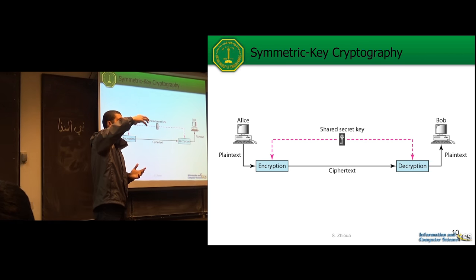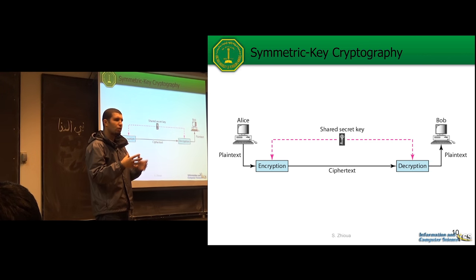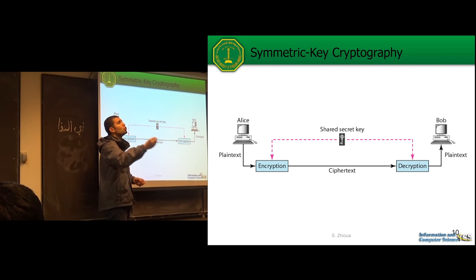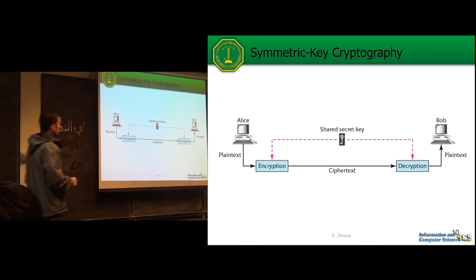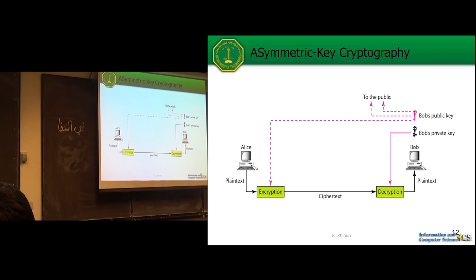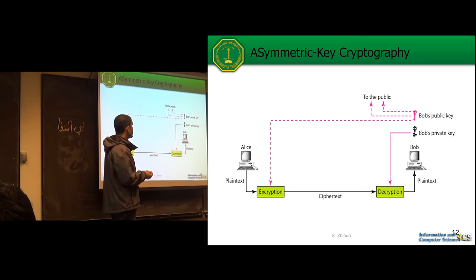In most secure operations you may need a certification authority or trusted authority. But in symmetric key cryptography, even the trusted entity does not know the secret — it is really only the sender and receiver who know it. The same key is used by the sender for encryption and by the receiver for decryption.